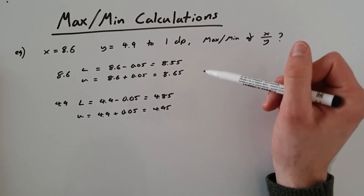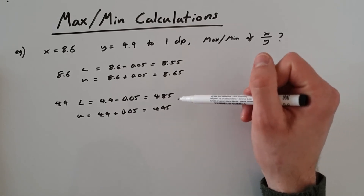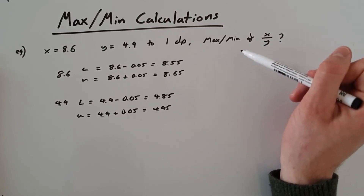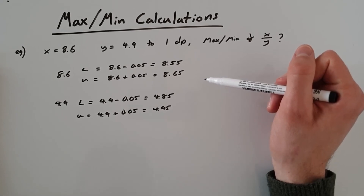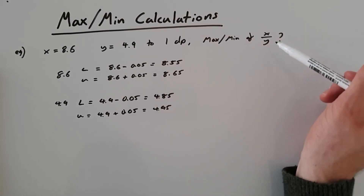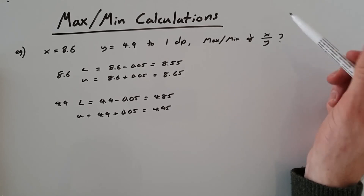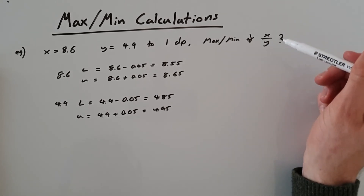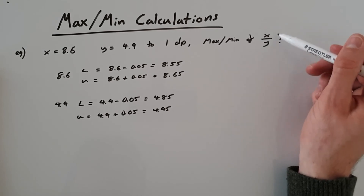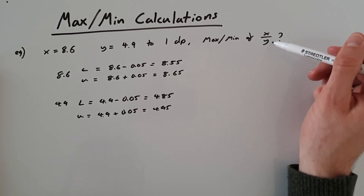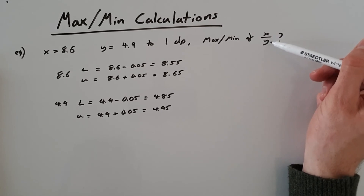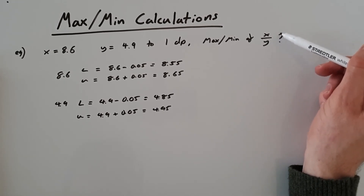Now we have our upper and lower bounds, we need to decide which numbers to divide to get our maximum and minimum values. The biggest slip-up here would be to take both lowers to get the minimum and both uppers to get the maximum — that worked for multiplication, but this time we're dividing. When dividing, the larger we make the denominator, the smaller the overall number will be. So for division the logic is reversed: to get the lowest overall number, we want the biggest number on the bottom.